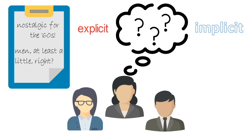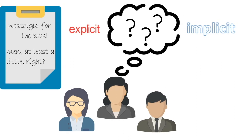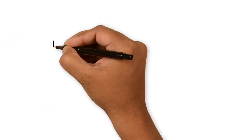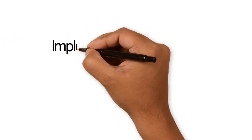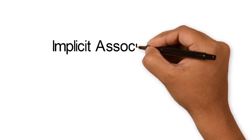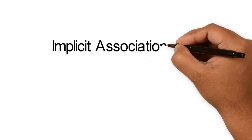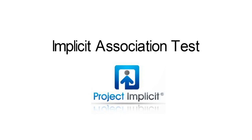Thankfully, innovative scientists have developed several tools to measure our implicit biases in ways that don't involve simplistic self-reports. Examples include priming instruments, linguistic tests, and neuroimaging. But the most popular and widely studied tool is the implicit association test — the IAT — which was developed nearly 20 years ago by the folks at Project Implicit.